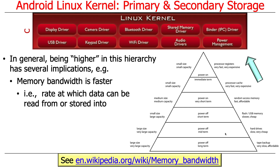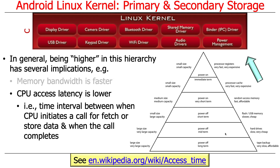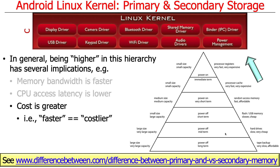Another thing implied by where you are in the hierarchy is the time the CPU takes to access data — the latency will be lower the higher up you are. So the gap between when the CPU says 'get me something at this address' and when you get something back — the closer you are to the top, the faster it'll be. Other dimensions matter too: cost is greater the higher up you go, though everything keeps getting cheaper over time.